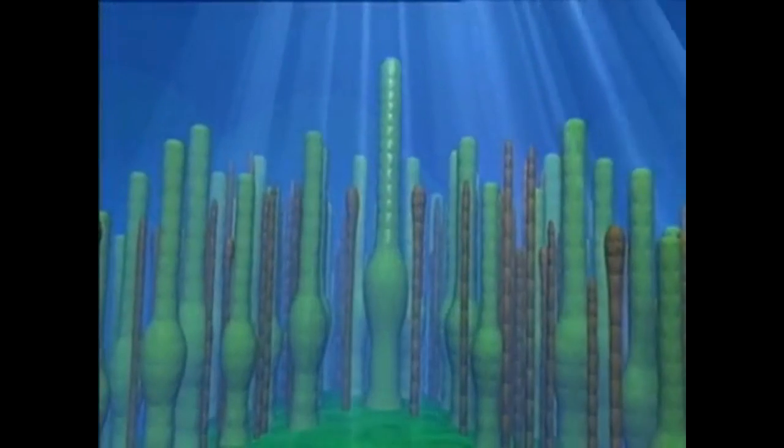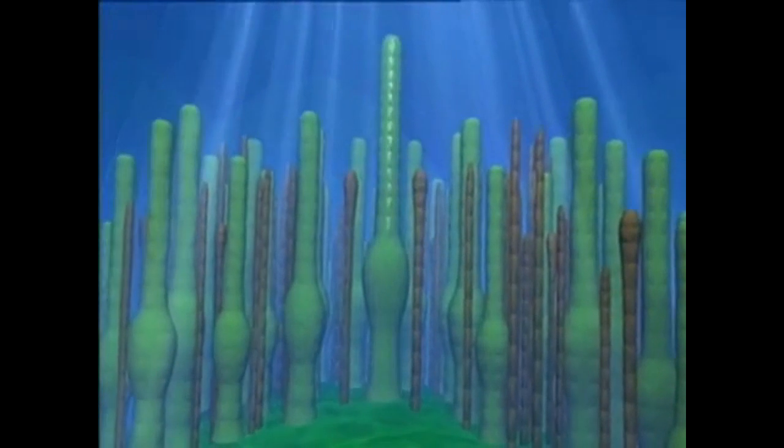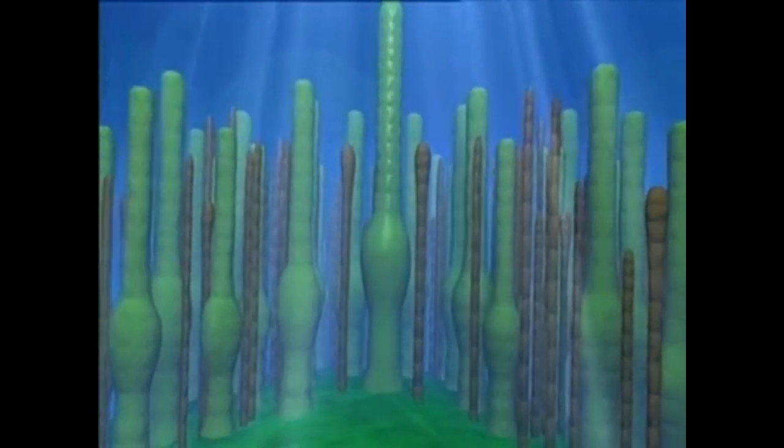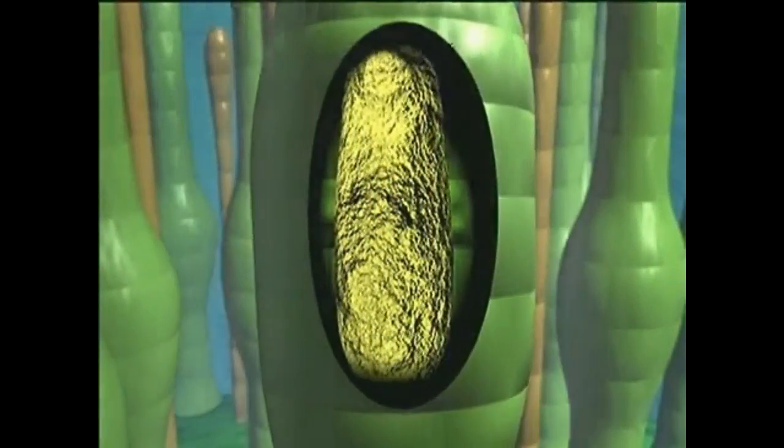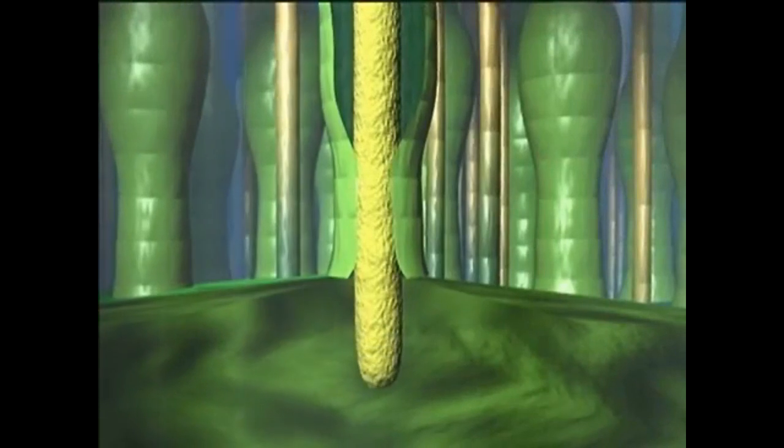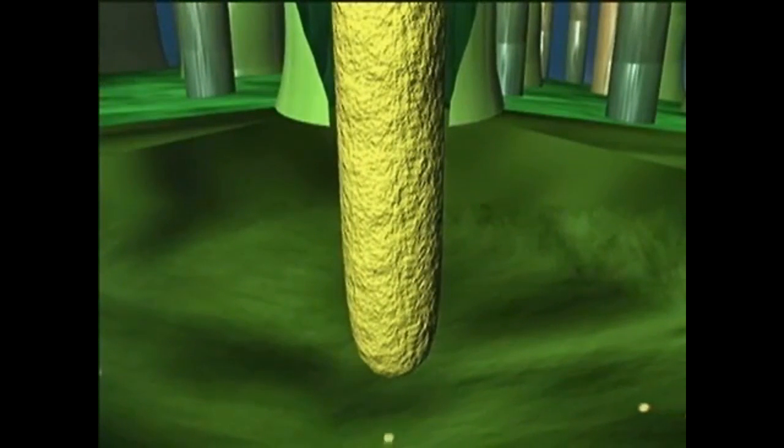After fertilization, many changes take place on the female stem tip. At first, the zygote remains within the venter, where it forms an embryo. However, one end of the embryo soon grows out of the venter and into the female stem. This allows it to obtain water and nutrients from the female plant.